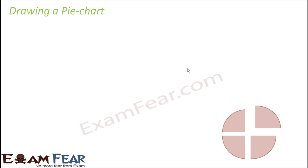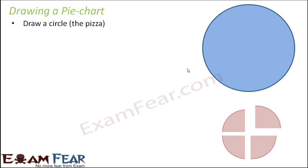Now let us understand how to draw a pie chart step by step, relating it to a pizza. The first step is to draw a circle — this circle represents the entire pizza. The next step is to determine the fraction, that is, what part of the entire circle you need. For example, one-fourth means the circle must be divided into four equal parts.